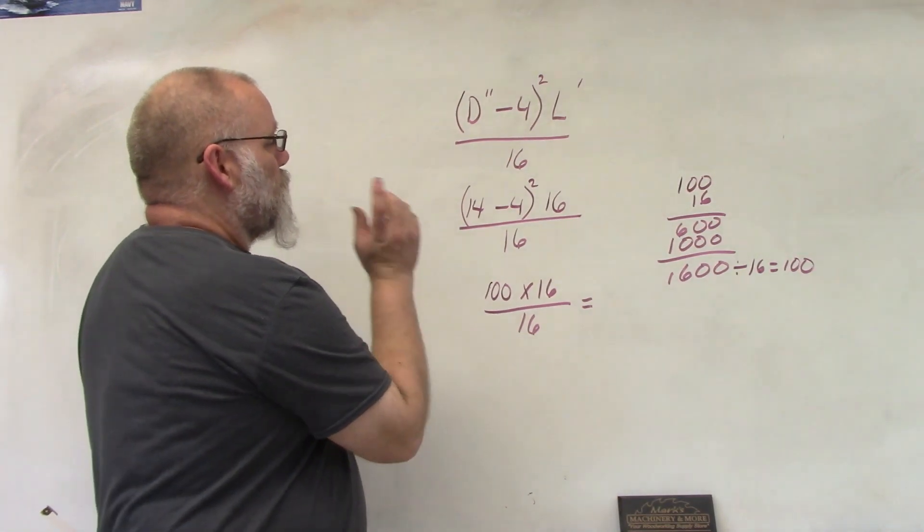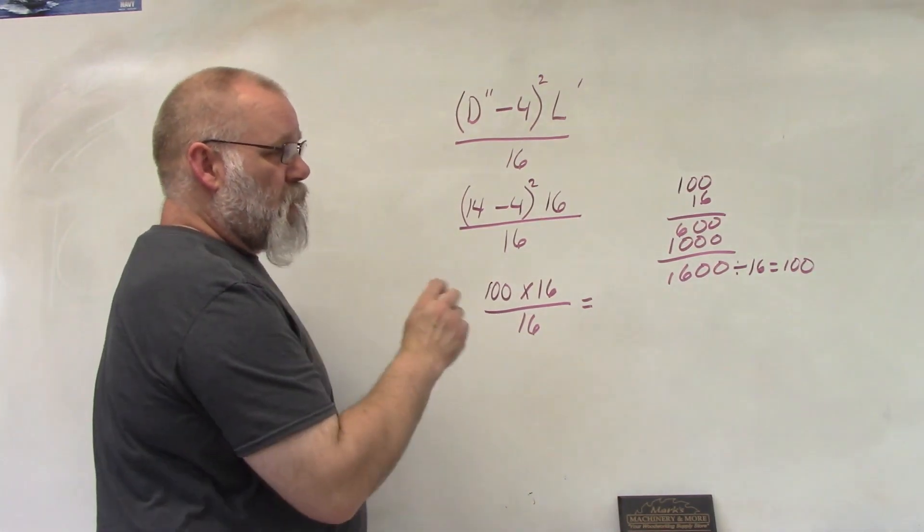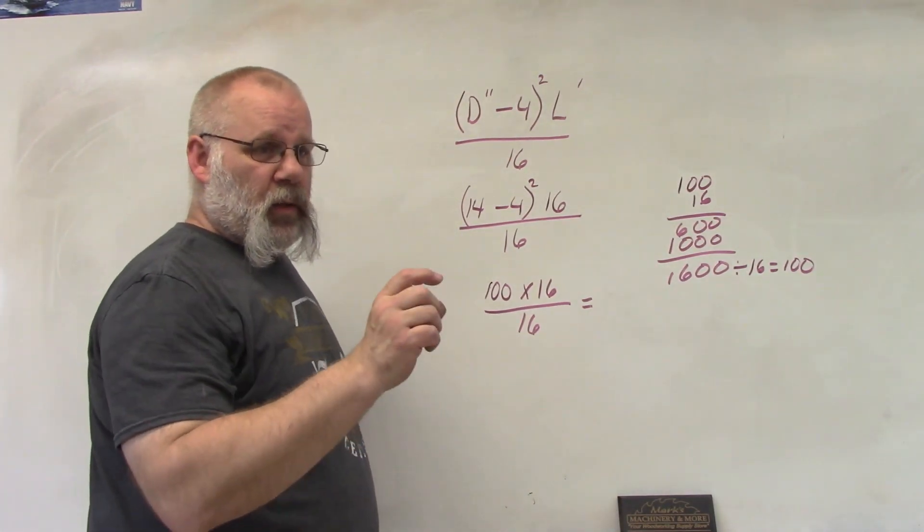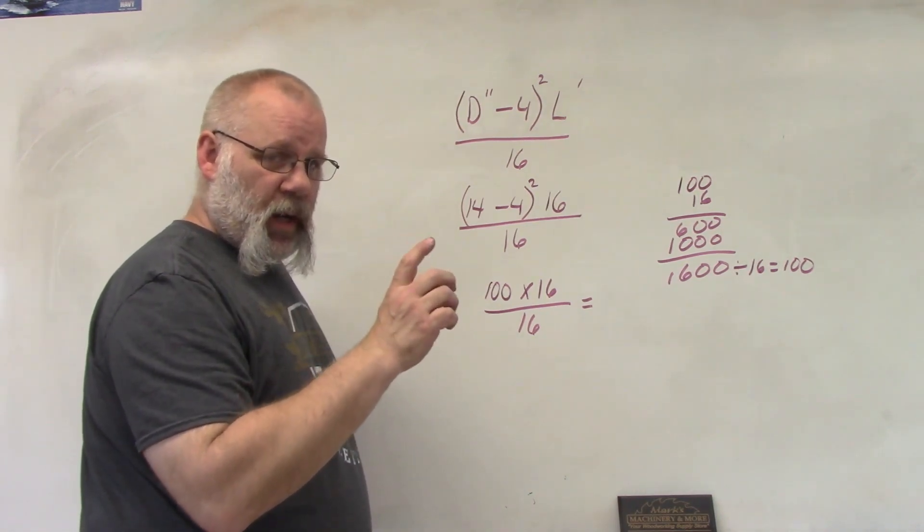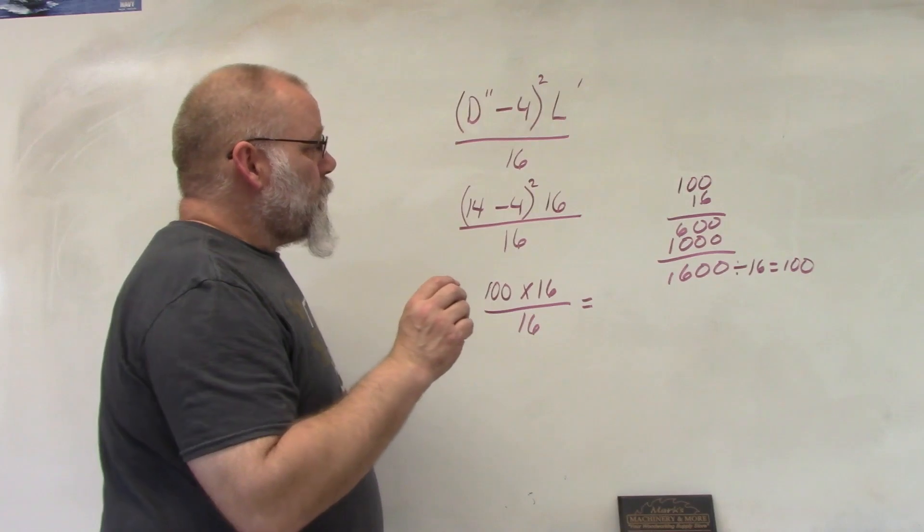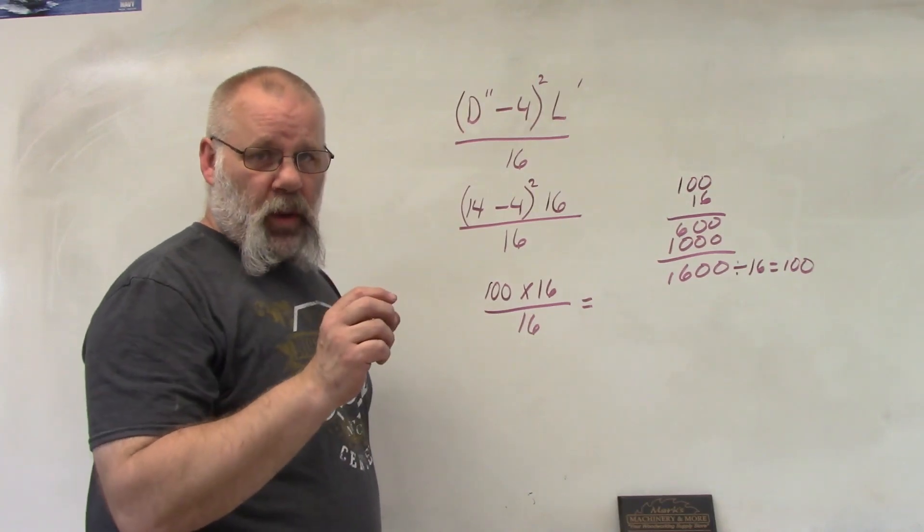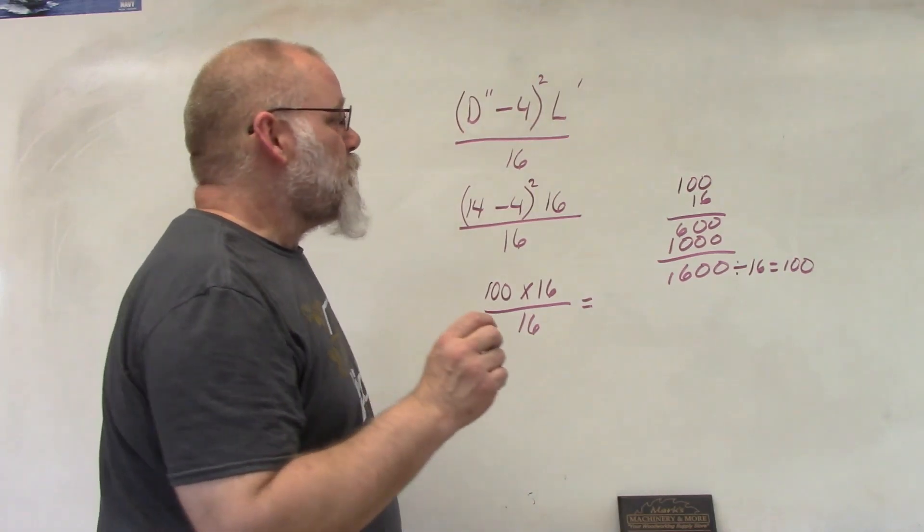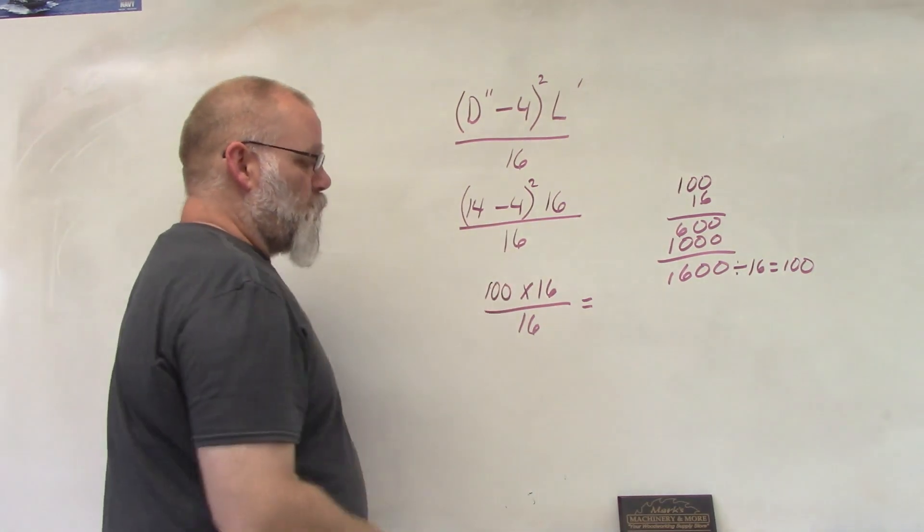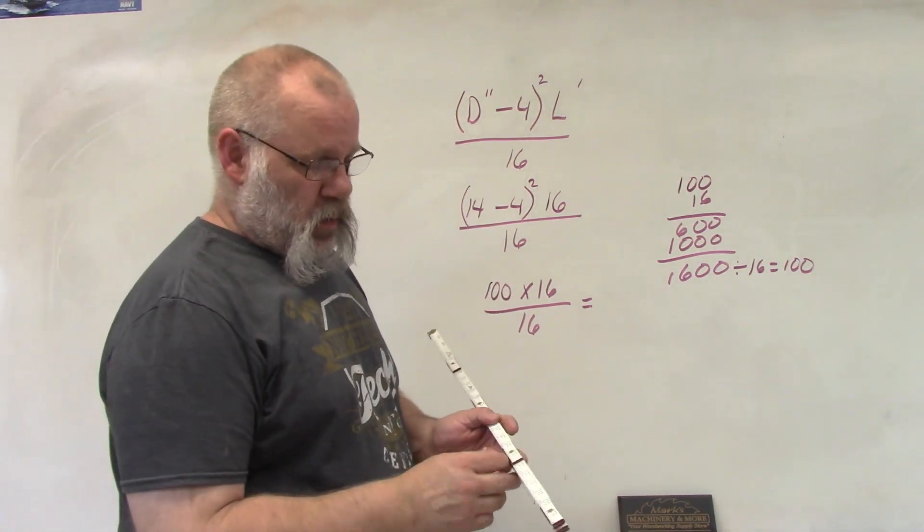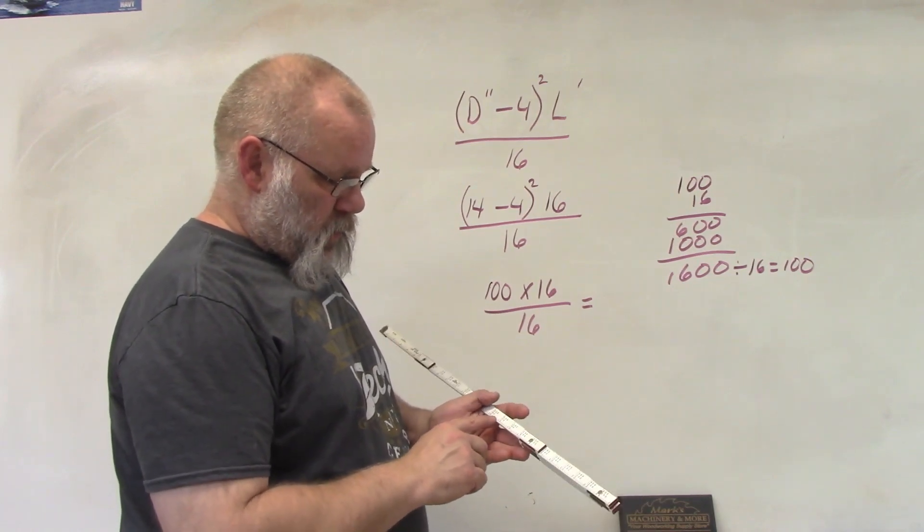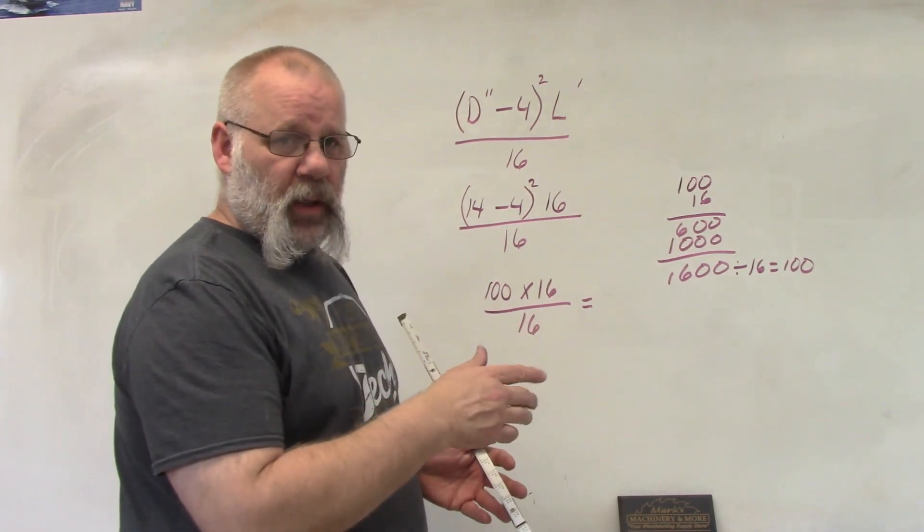So that takes into consideration the sapwood, whereas this chart does that already for you. So you can just measure whatever distance you are and it's already calculated in there—it's subtracted off that sapwood.